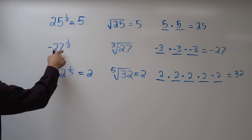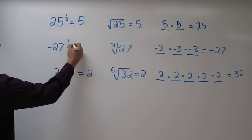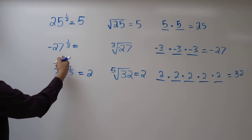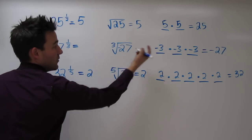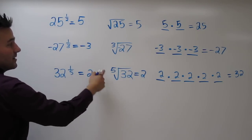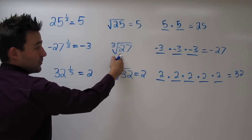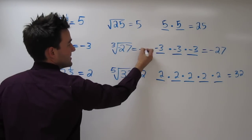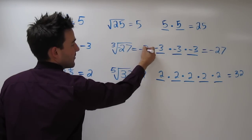Alright, I guess we never filled this one out. Negative 27 to the 1 third power was negative 3. The cube root of negative 27 is negative 3.